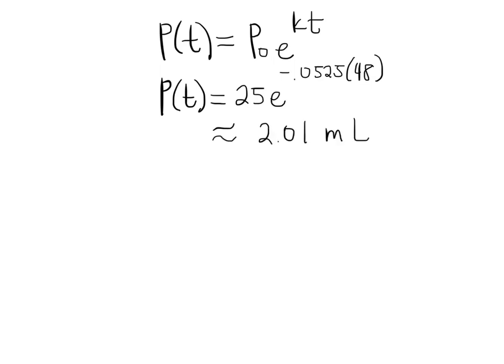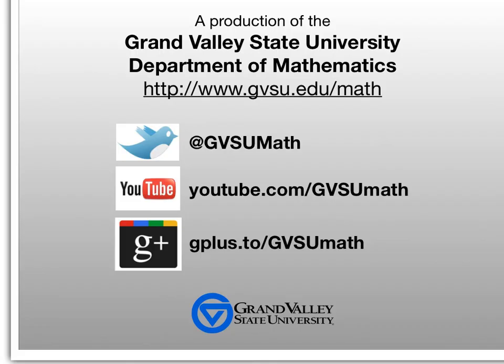If we would have continued on our table we would have seen that was very close to what we probably would have gotten because 48 is about a little bit more than three but a little bit less than four half-lives. Anyway, you end up getting something that's pretty close to this. Thank you for watching.